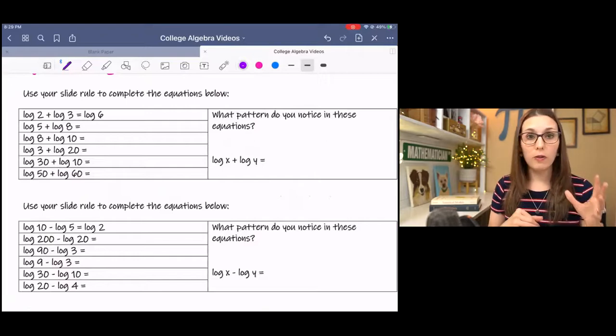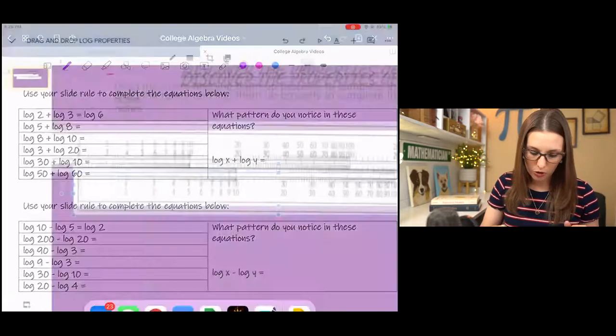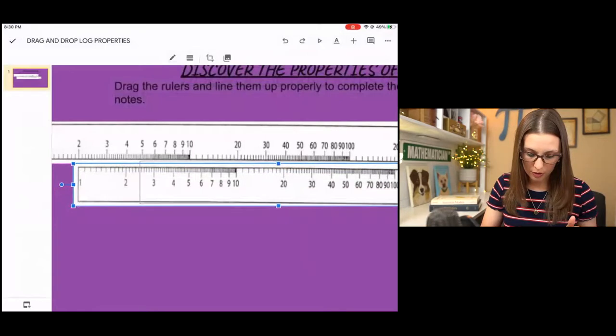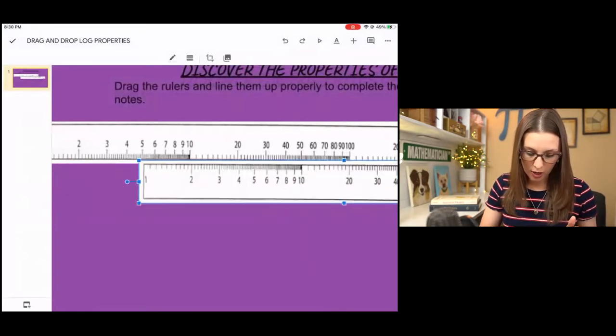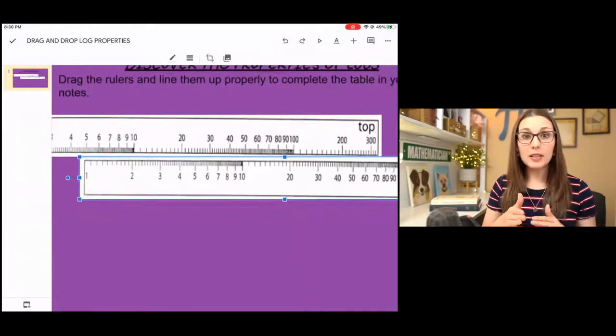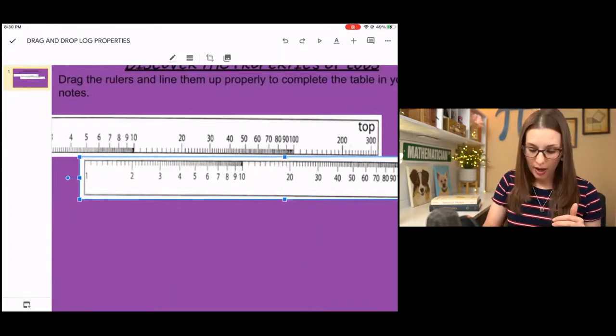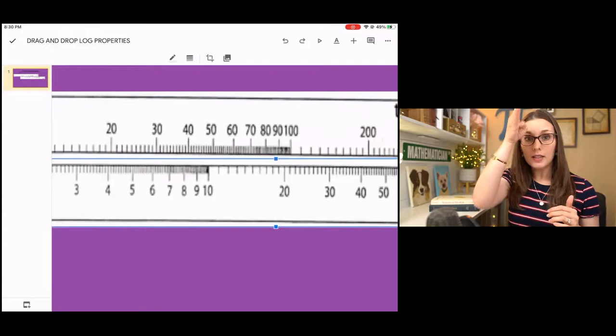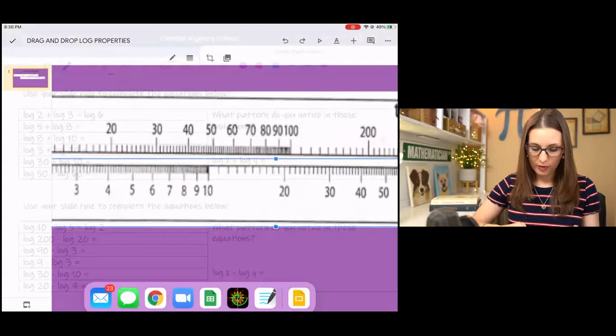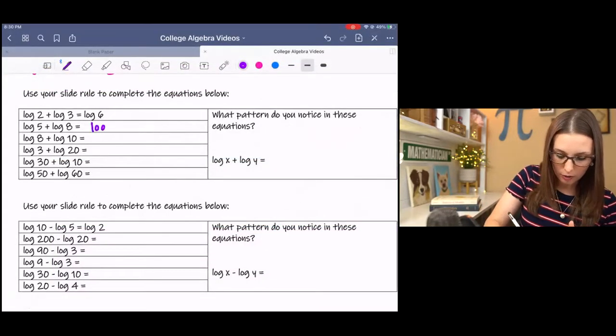The next one, we have log 5 plus log 8. We're starting at log 5, that's my starting point, and I'm trying to line it up. If you locate log 8 on the bottom, above log 8 is log 40. So log 5 plus log 8 is log 40.